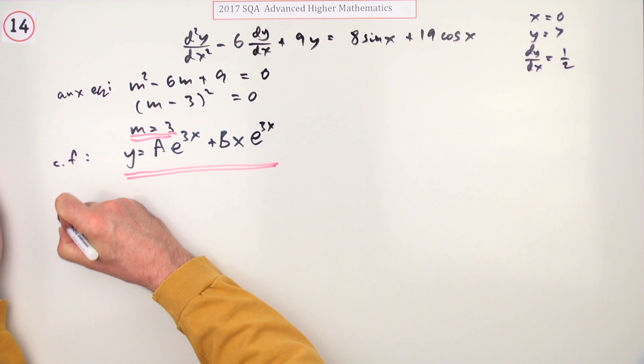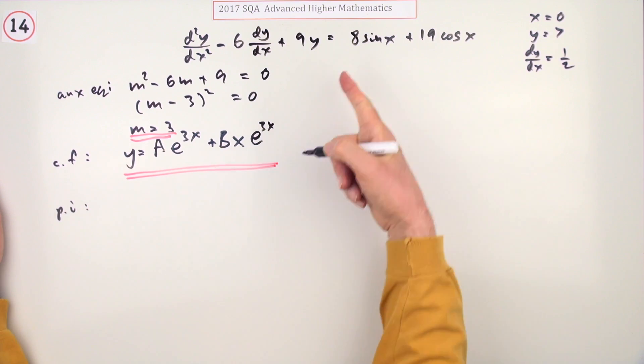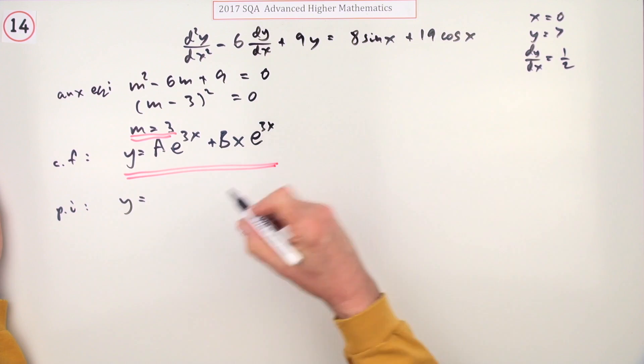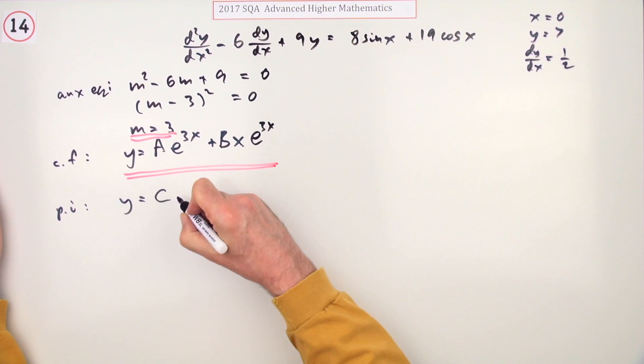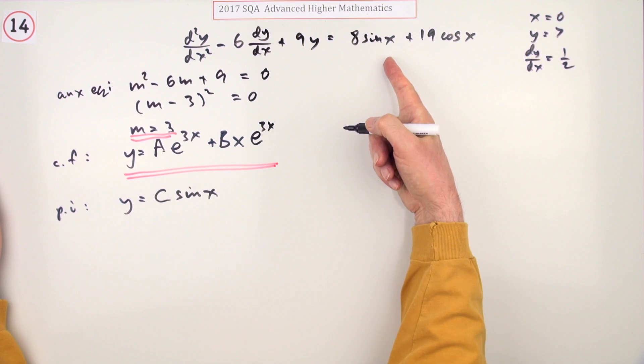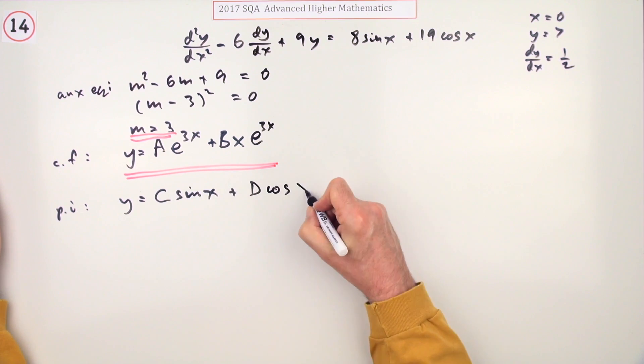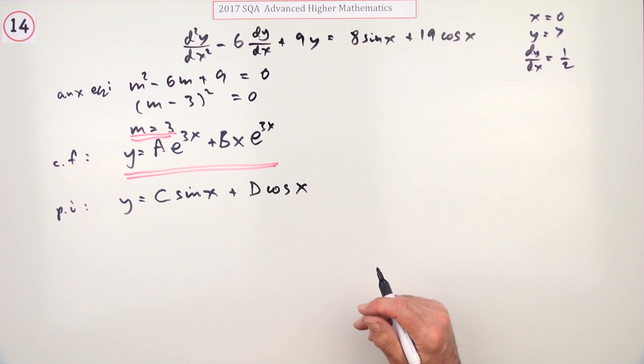Now what about the particular integral? You can see straight away sines and cosines. I've used A and B, so I'll go for C - so C lots of sine x, and there's no clash, plus D lots of cos x should do for this.